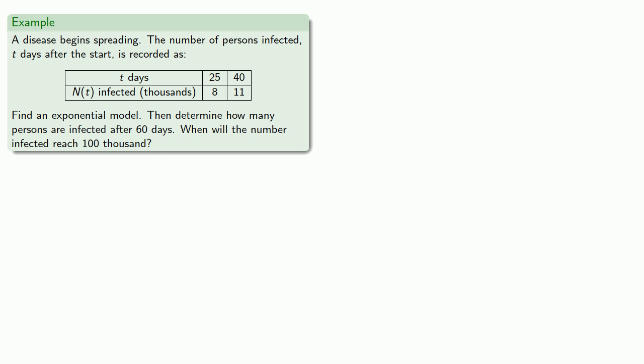For example, a disease begins spreading. The number of persons infected t days after the start is recorded as follows. Let's find an exponential model, then determine how many persons are infected after 60 days, and then when will the number infected reach 100,000.